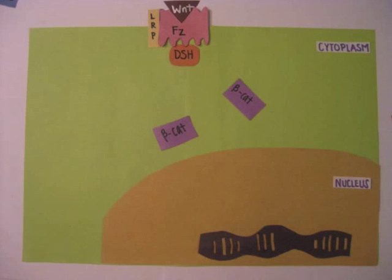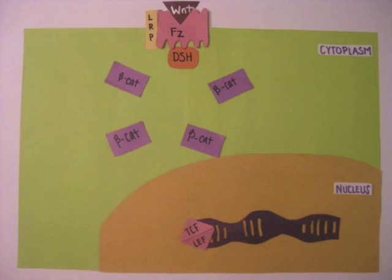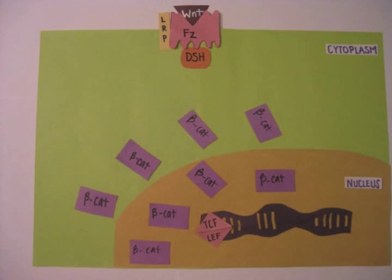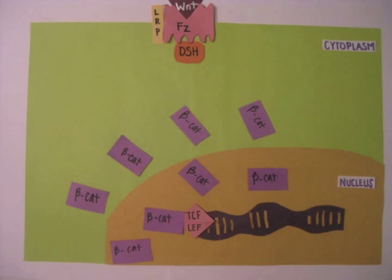Accumulation of beta-catenin occurs, first in the cytoplasm, then in the nucleus. Beta-catenin interferes with gene expression by binding to TCF and LEF and acts as a transcription factor.